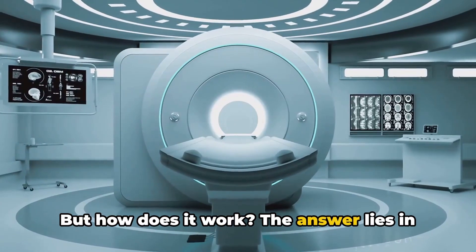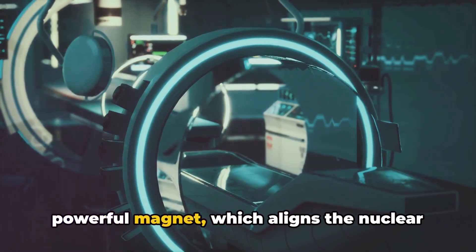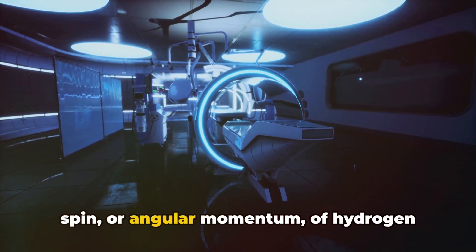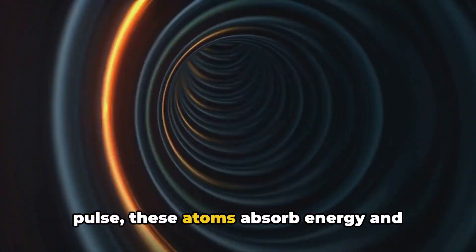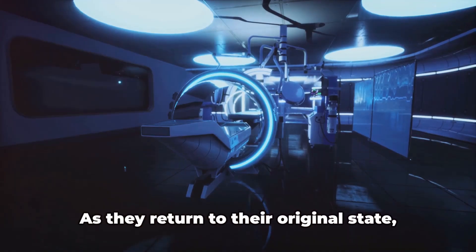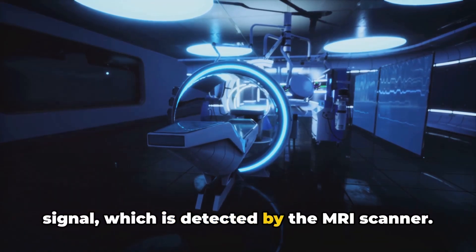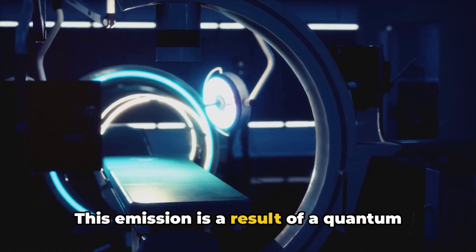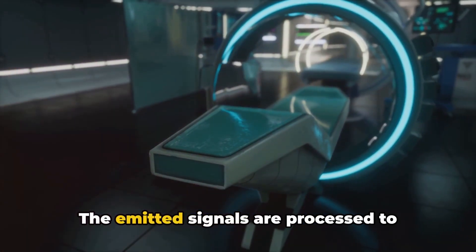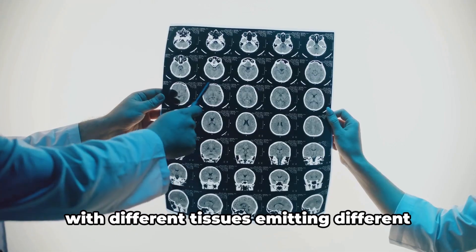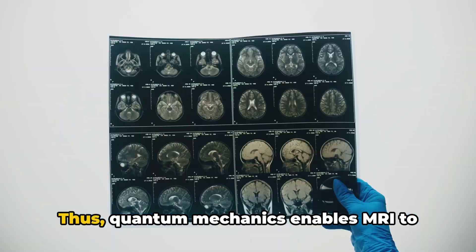But how does it work? The answer lies in the realm of quantum mechanics. At the heart of an MRI machine is a powerful magnet which aligns the nuclear spin, or angular momentum, of hydrogen atoms in our bodies. When subjected to a radio frequency pulse, these atoms absorb energy and flip their alignment. As they return to their original state, they emit this absorbed energy as a radio signal which is detected by the MRI scanner. This emission is a result of a quantum mechanical phenomenon known as nuclear magnetic resonance. The emitted signals are processed to generate images of our organs and tissues, with different tissues emitting different signals due to variations in their water content. Thus, quantum mechanics enables MRI to produce detailed three-dimensional images of our body's interior without the need for any invasive procedures.